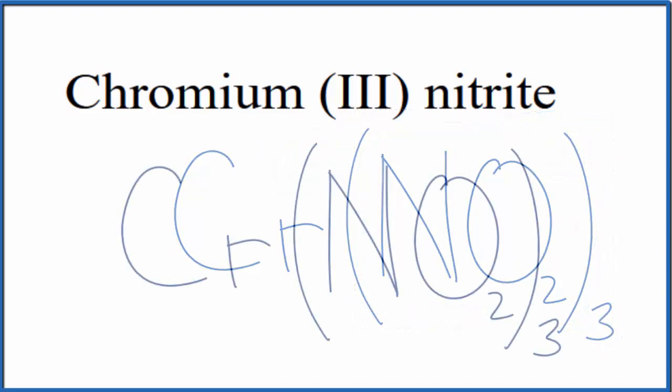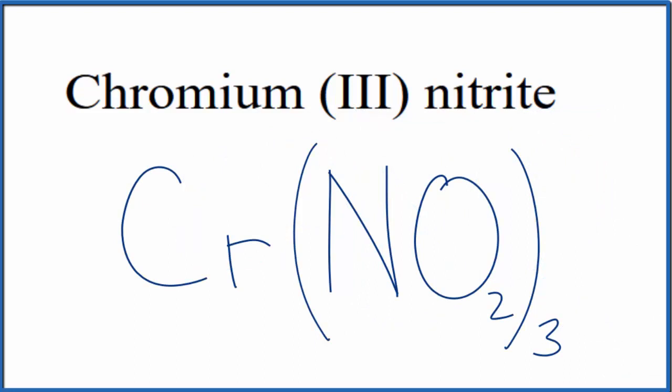And this is the formula for chromium (III) nitrite, Cr(NO2)3. We have 3 of these nitrite ions here bonded to the chromium. This is Dr. B, and thanks for watching.